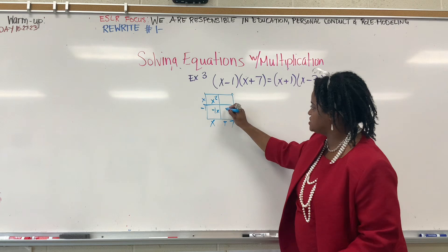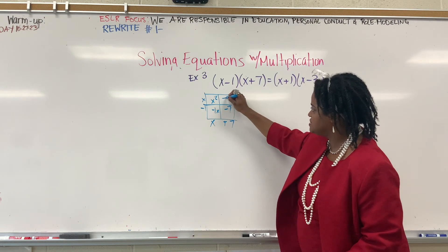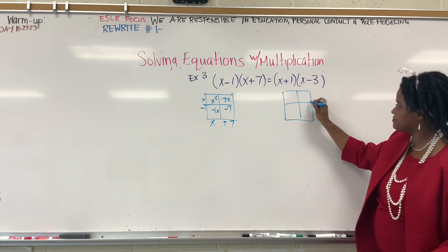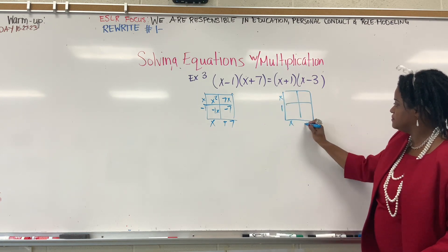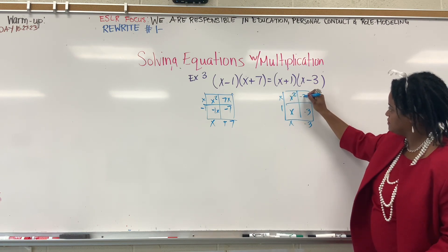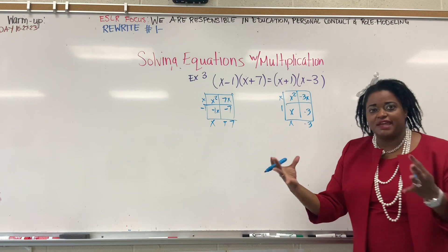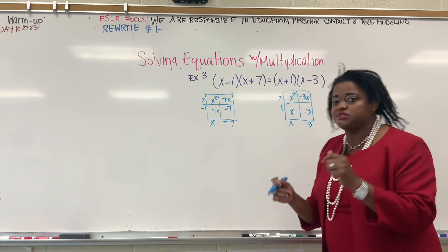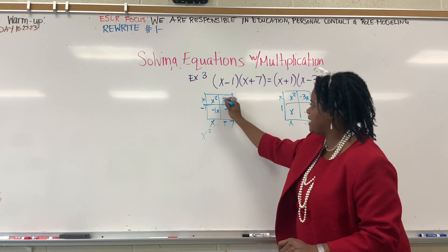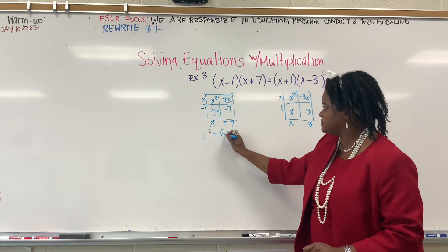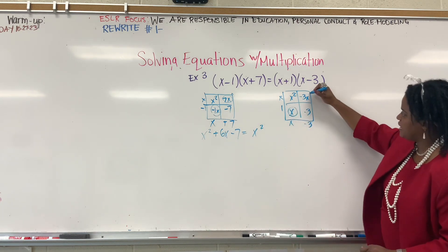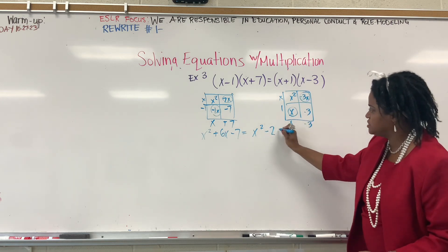x squared, negative 1x, negative 7, 7x. Over here... so now, we're going to take that out and combine like terms. I'm going to do that in one step. The 7x and negative 1x make 6x. The x here and negative 3x make negative 2x.